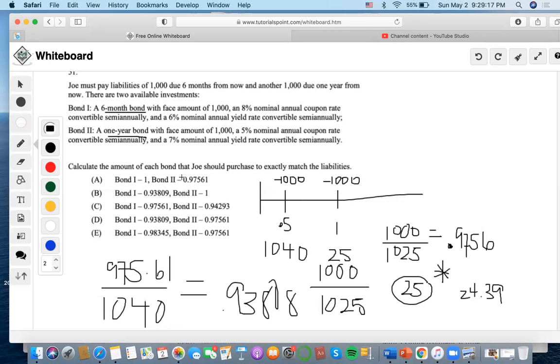Looking at the answer choices, we can eliminate options. For bond one, we got 0.93808. For bond two, we used 0.9756. That's why the answer is choice D.